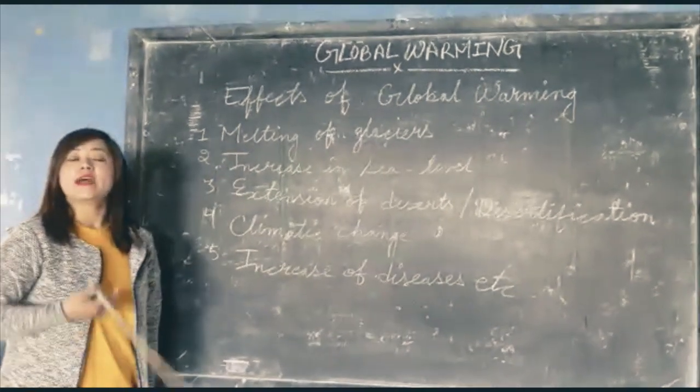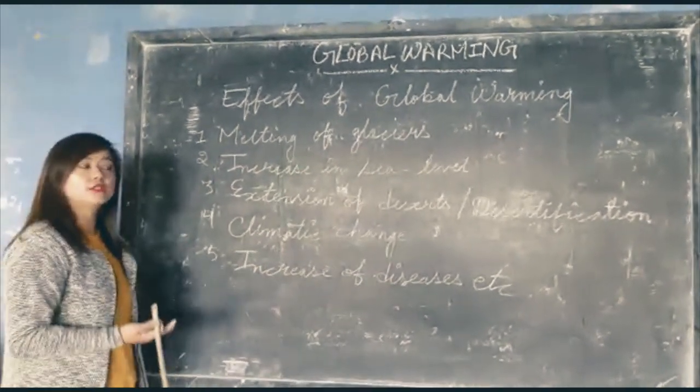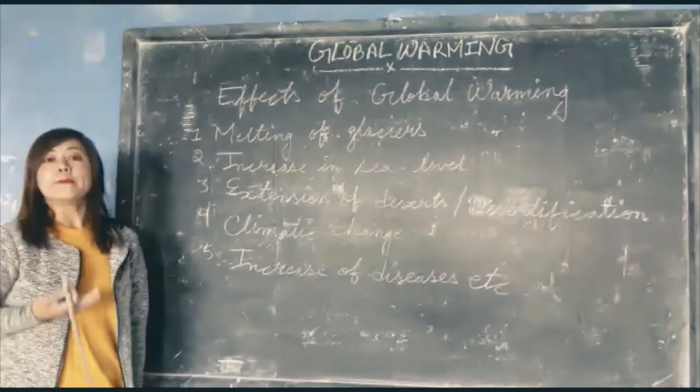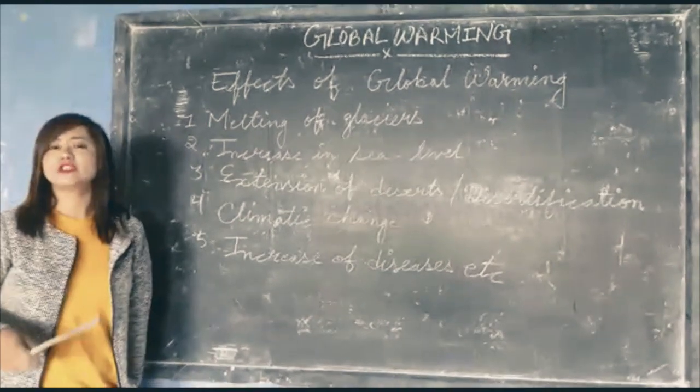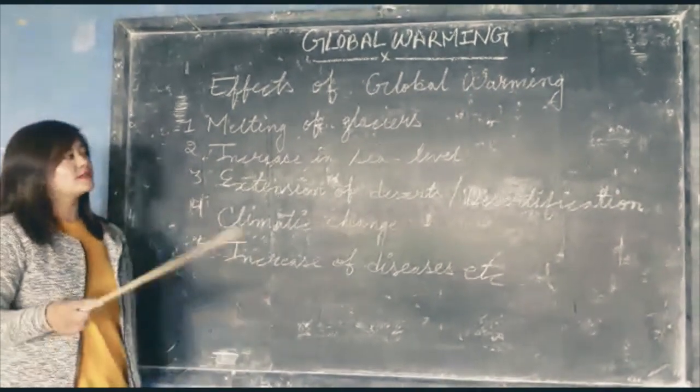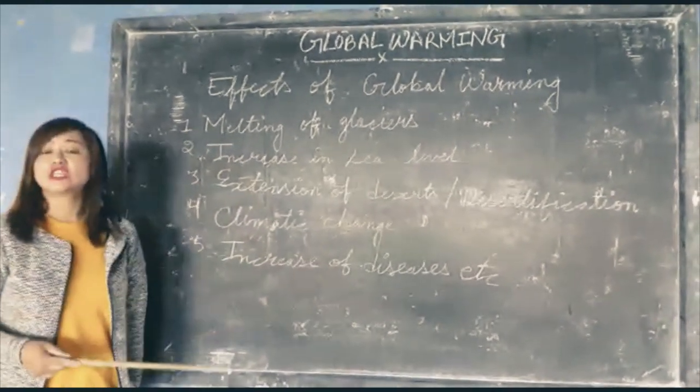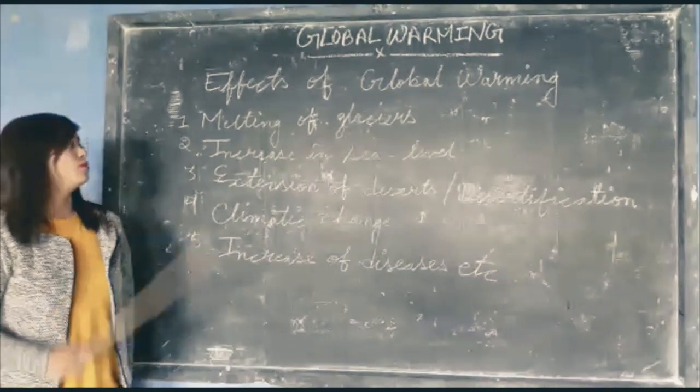Because of global warming, natural conditions are getting hampered. As a result, lands are heating. Fertile soil is converting into infertile soil. This is how desertification is taking place due to global warming.